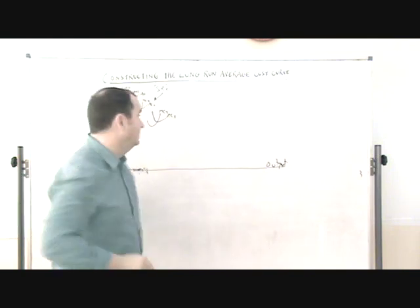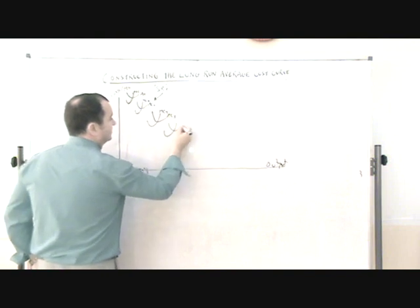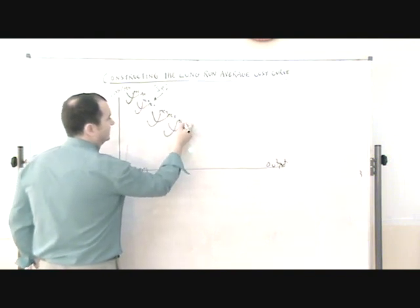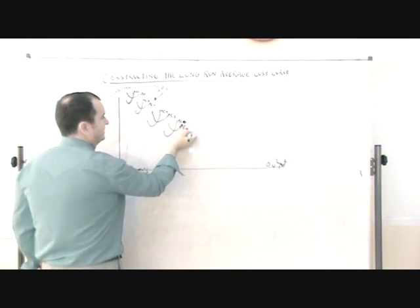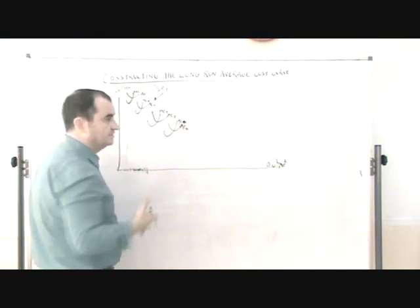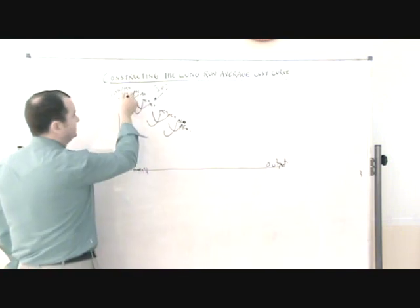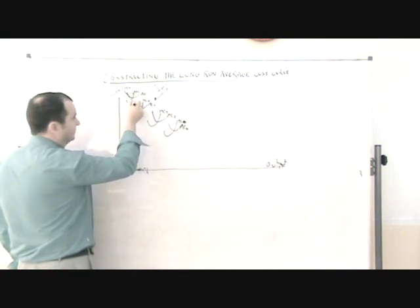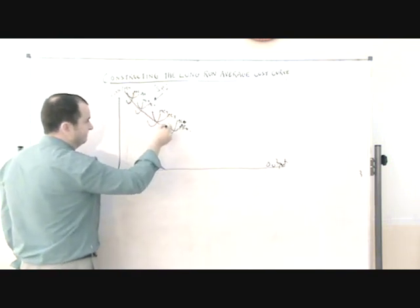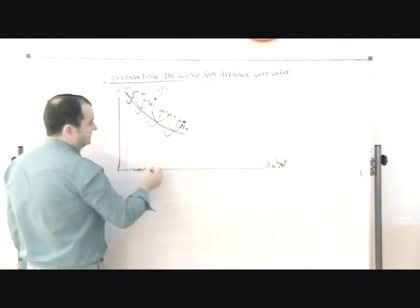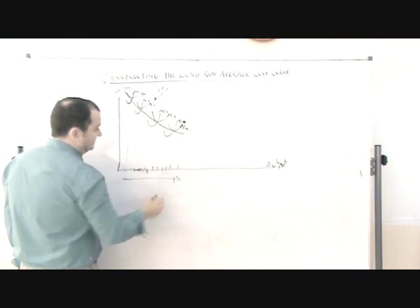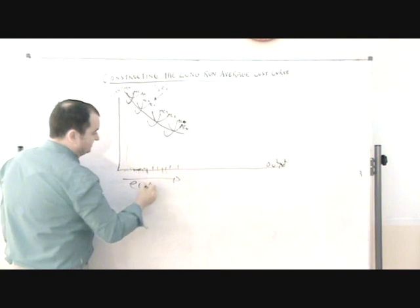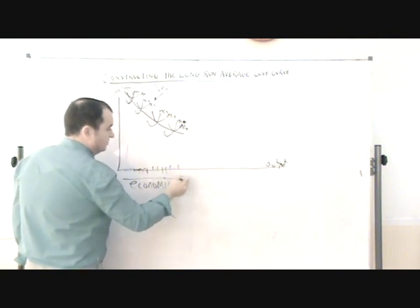But these cost curves are falling, not because of anything to do with diminishing returns. This overall fall in costs as they increase their output here is thanks to economies of scale.